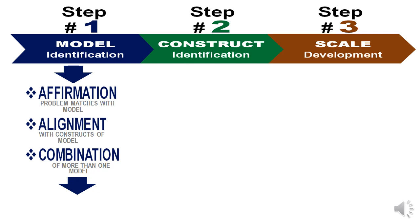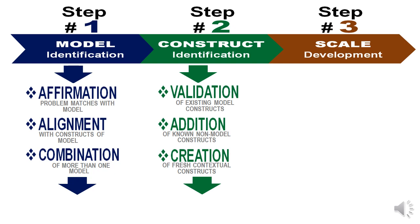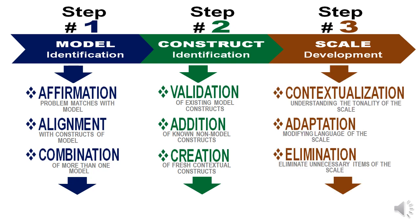From models, we move to constructs — how do I validate the existing constructs? Do I need to add non-model constructs from the existing business sphere, or do I need to create completely fresh contextual constructs? From constructs, when we move to scale, the contextualization continues in trying to understand the tonality of the scale, and then mapping, adapting, and modifying the scale to suit my current requirement.